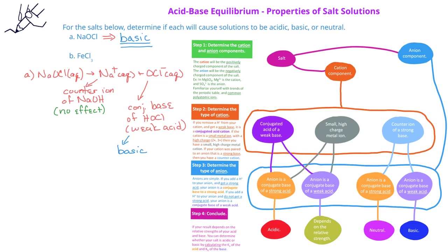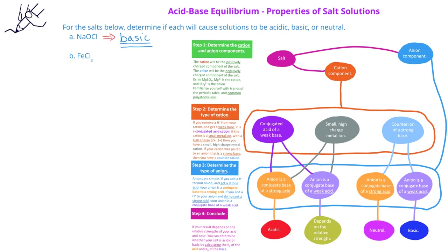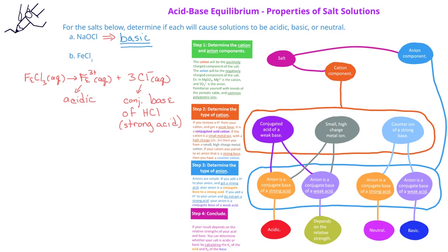Now let's look at the second salt, iron chloride. If we separate this salt into its ions, we get the iron 3+ ion and three chloride ions. When we look at the iron ion, we see that it is a small, highly charged cation, and therefore the iron 3+ will make the solution acidic. In the case of the chloride ion, if we were to add a hydrogen, we would have HCl — hydrochloric acid. We know that hydrochloric acid is a strong acid, so chloride is a conjugate base of a strong acid and therefore will have no effect on the solution pH. So overall, the cation makes the solution acidic and the chloride has no effect, so a solution of iron(III) chloride will be slightly acidic.